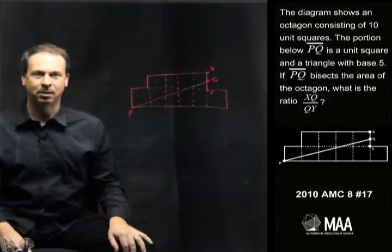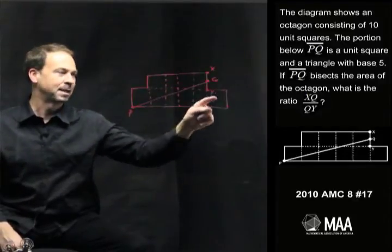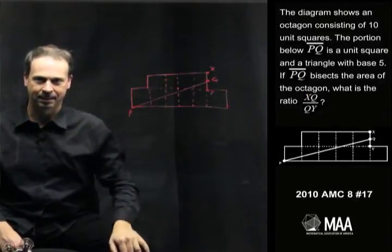So what's the question? It says this octagon has area 10 square units. My picture's a little bit wonky, but yes, 1, 2, 3, 4, 5, 6, 7, 8, 9, 10. Area is indeed 10. Great.